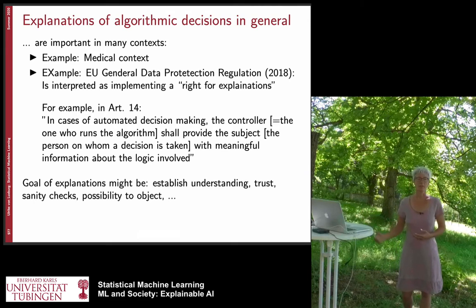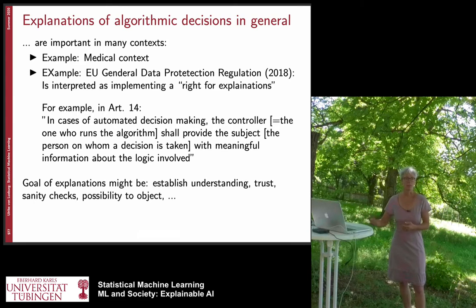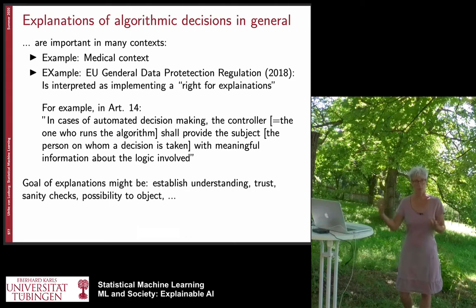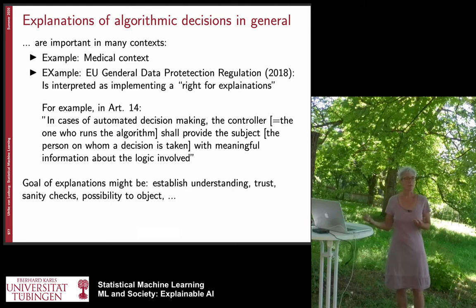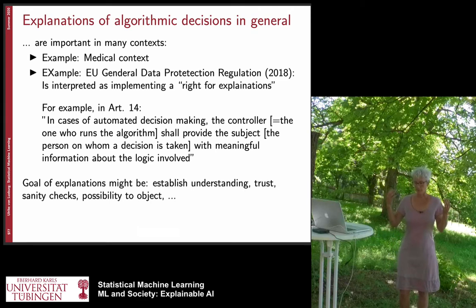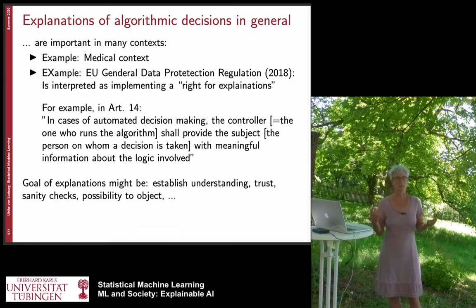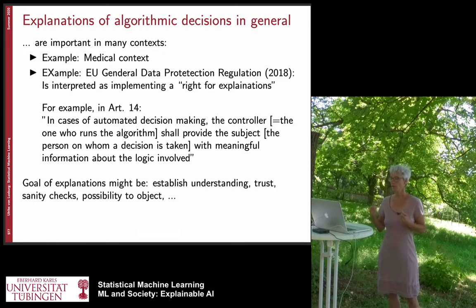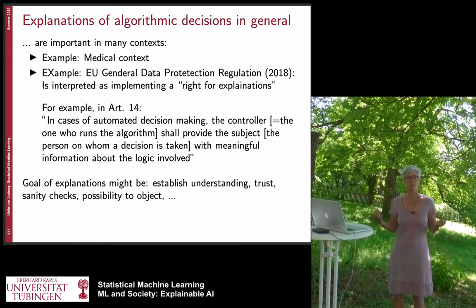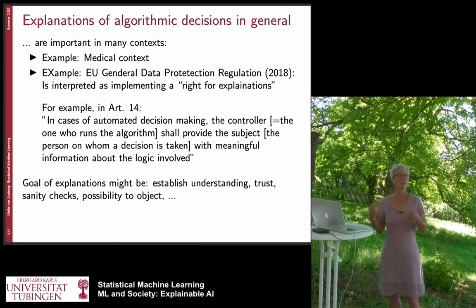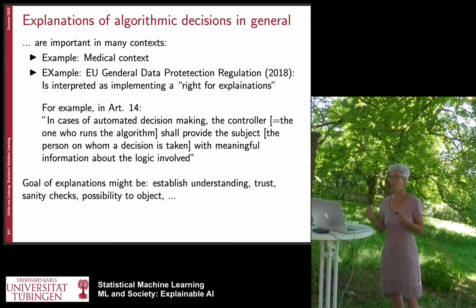Also in a social context — for example, a bank giving someone a credit or not — you would also like to have an explanation for why the machine came to this particular decision. The EU data protection regulation, which came into effect in 2018, has an explicit paragraph about this, which is typically interpreted as a right for explanations. It was a bit surprising to me how sloppily it is formulated, but what it essentially says is something like what is written here on this slide.